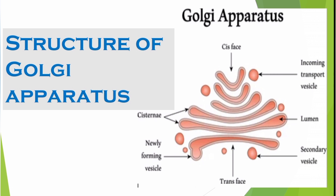The convex part is the cis face. The concave part is the trans face. This is the trans face of the Golgi apparatus.